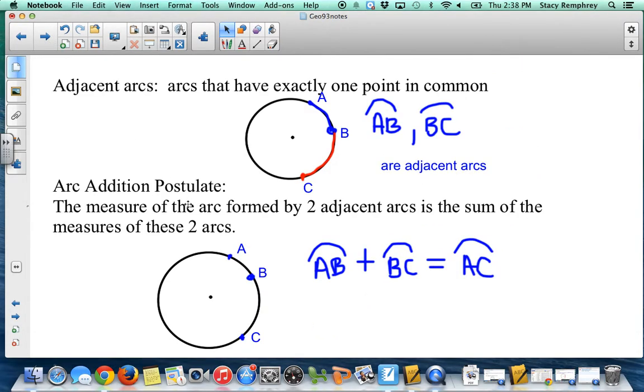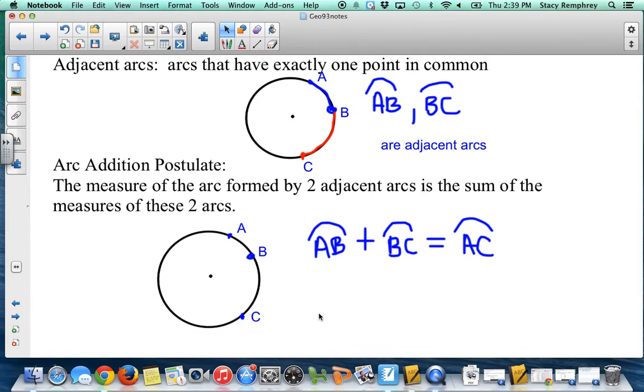Adjacent arcs. We did adjacent angles, and this is the same idea. So AB in blue is adjacent to arc BC. They only have point B in common. So they're right next to each other, but they don't overlap. The arc addition postulate uses that adjacent arc. That's why we had to define it before. And it's just the same idea as angle addition, segment addition. We're going to do area addition later, where it just says two little arcs, so AB and BC, together make a large arc, in this case AC.